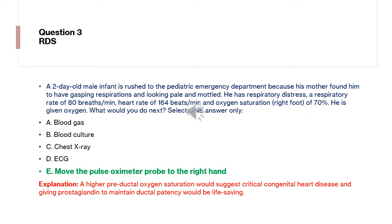This is important because if we find the right-hand saturations are higher than 70% by three to five percent — for example, 75–80% — we should consider critical cyanotic congenital heart disease. Giving prostaglandin at this point is highly important to maintain the duct, which could be life-saving.